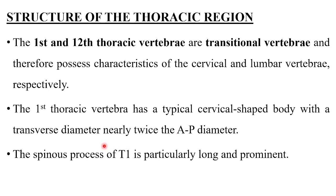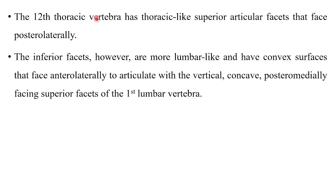The first thoracic vertebrae has a typical cervical-shaped body with a transverse diameter nearly twice the anteroposterior diameter. The spinous process of the first thoracic vertebrae is particularly long and prominent. The 12th thoracic vertebrae has thoracic-like superior articular facets that face posterolaterally, while the inferior facets are more lumbar-like, with convex surfaces facing anterolaterally to articulate with the superior facets of the first lumbar vertebrae.